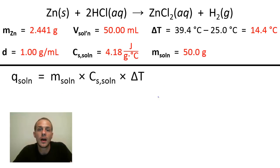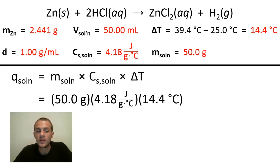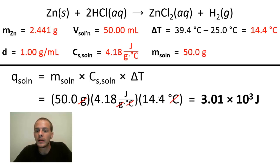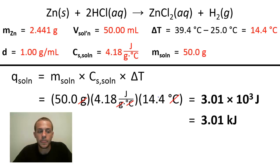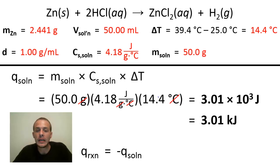Plugging into the formula: q_soln = 50.0 g × 4.18 J/g·°C × 14.4°C. The grams and degrees Celsius cancel, giving 3.01 × 10³ joules, or 3.01 kilojoules. The heat of reaction is the negative of that: q_rxn = −3.01 kJ. This tells us how much heat was given off by this particular chemical reaction in our experiment.